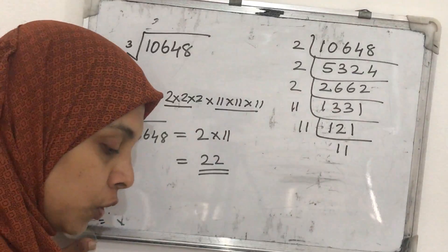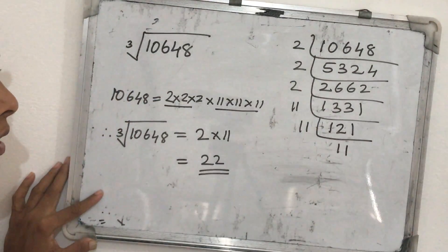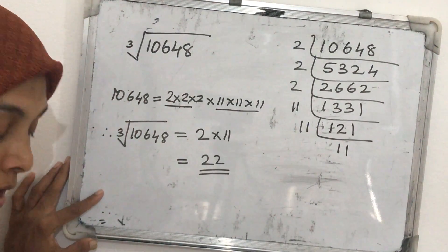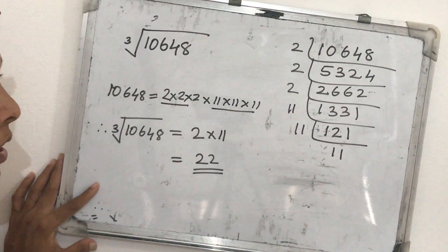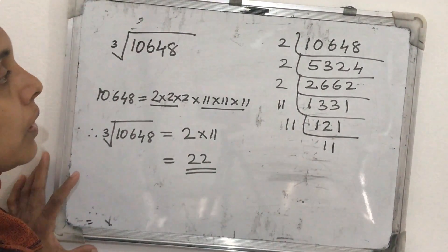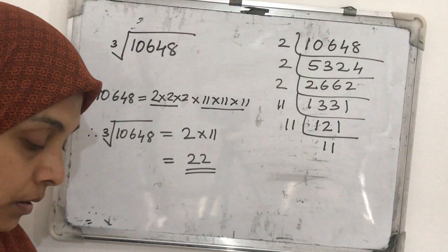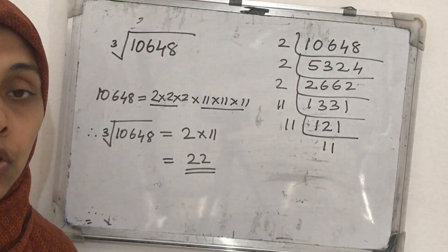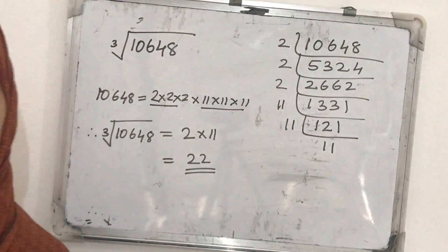So this way we can find the cube root of bigger numbers also using the prime factorization method. Study this method and try the homework questions. If any doubts, you can call me. Try to attend today's revision test questions as well. Thank you.